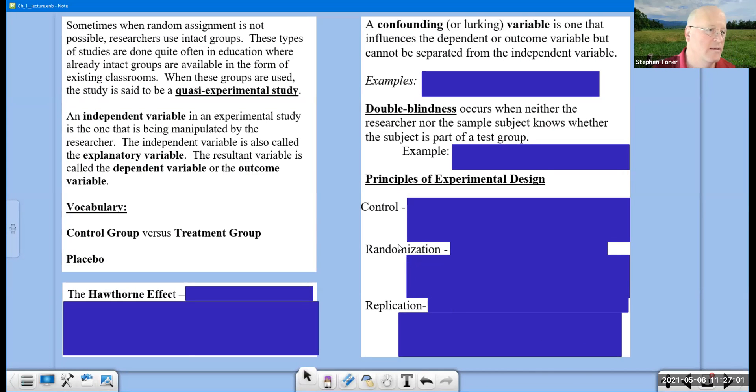Sometimes when random assignment is not possible, researchers use intact groups. These types of studies are done quite often in education. When these groups are used, it's called a quasi-experimental study. An independent variable in an experimental study is the one that's being manipulated by the researcher. The resulting variable is called the dependent variable or the outcome variable.